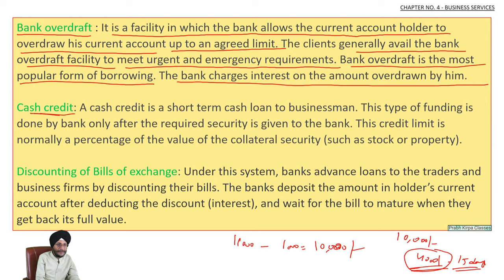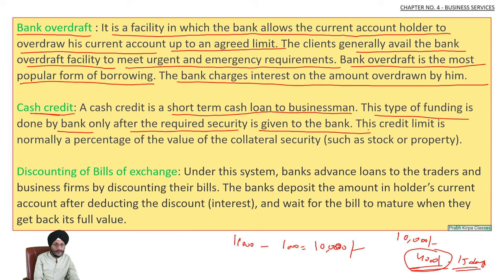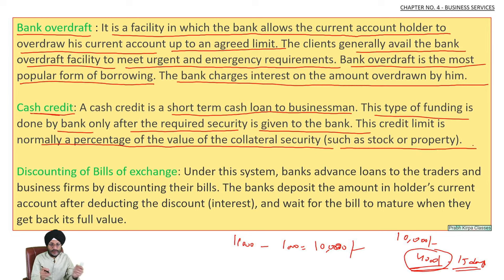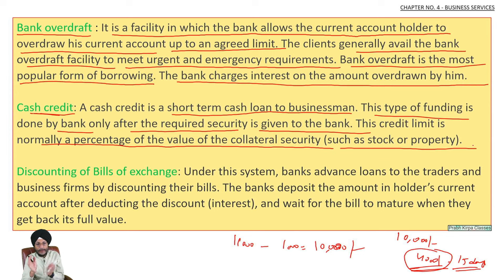Next is cash credit. It is a short-term cash loan facility to the businessman. This type of funding is done by the bank only after the required security is given. This credit limit is normally a percentage of the value of collateral security such as stock or property — for example, if you have stock or property worth Rs. 1,00,000, the bank may give you a cash credit facility of say Rs. 50,000.